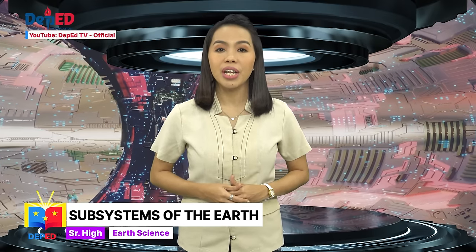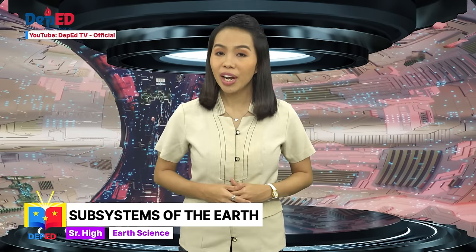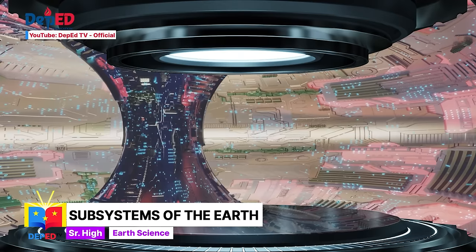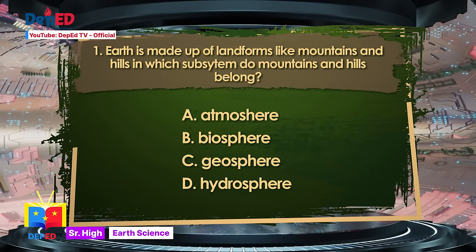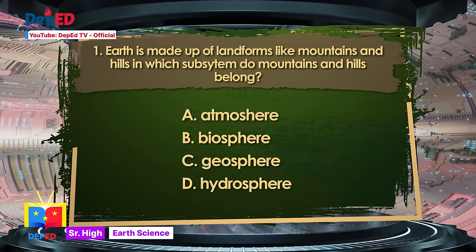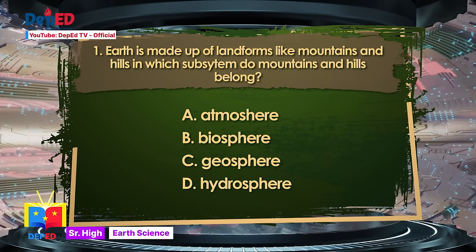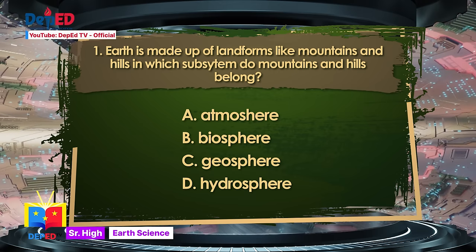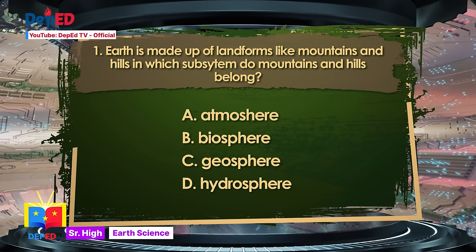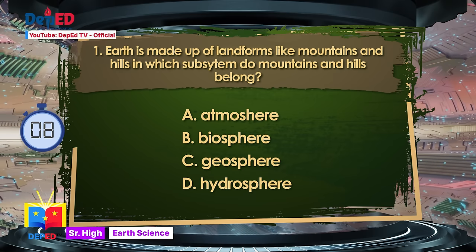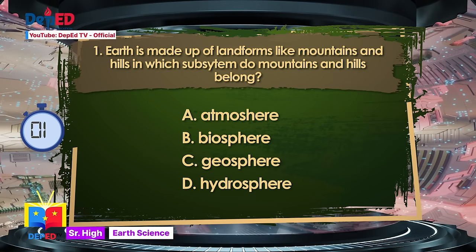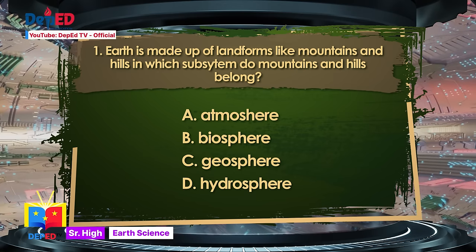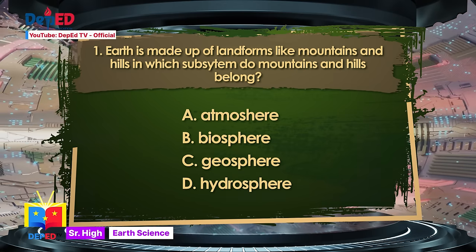Now let's check your comprehension on this topic. Number 1. Earth is made up of landforms like mountains and hills. In which subsystem do mountains and hills belong? A. Atmosphere. B. Biosphere. C. Geosphere. D. Hydrosphere. The correct answer is C — Geosphere.